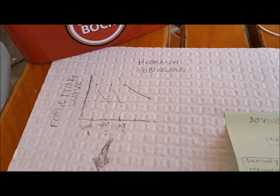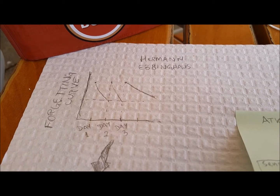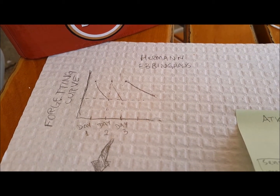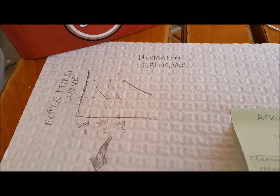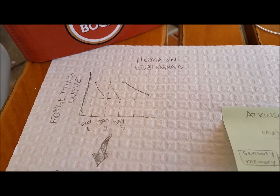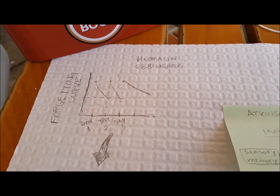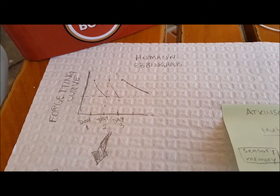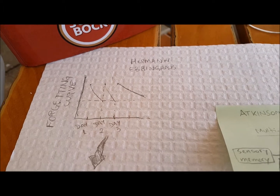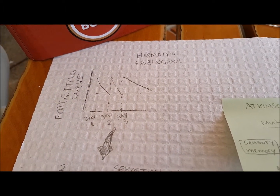Let's start with Hermann Ebbinghaus. In the 1800s, he came up with something that we now know as the forgetting curve, so he tested himself with random syllables and tried to remember them after some intervals.